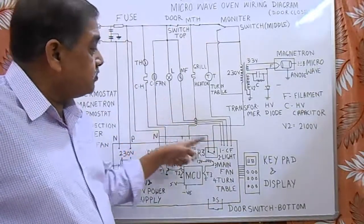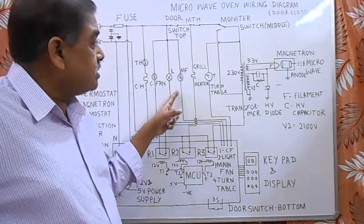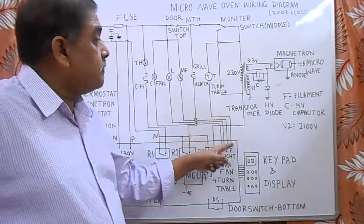The second one controls the light inside the chamber. The third is the magnetron cooling fan, and the fourth one is the turntable.